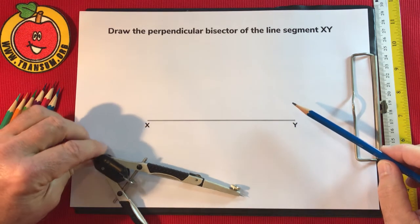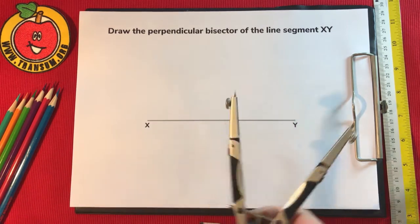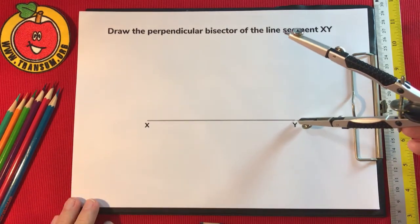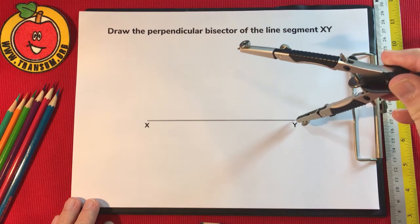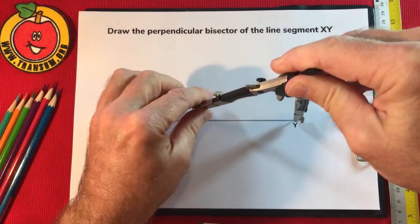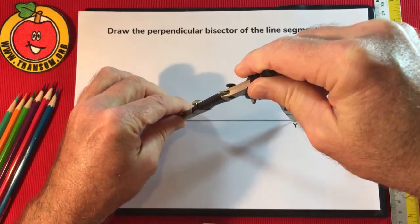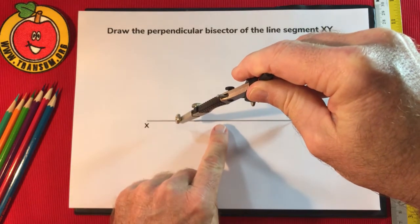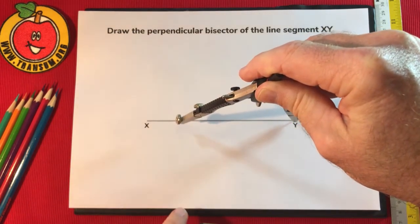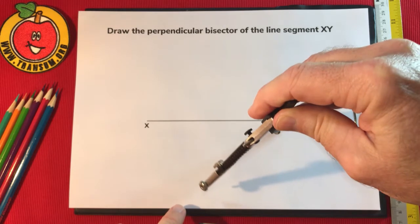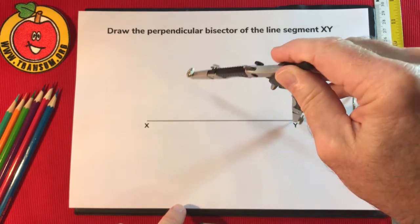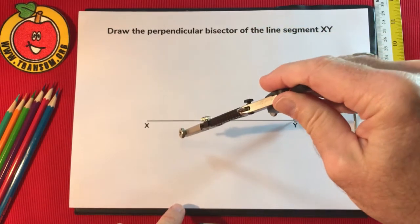The way we do this is with a pair of compasses. First of all, put the point of the compasses on the point Y and set the radius so that it is at least half of the length of the line, but not too long that you can't draw some arcs above and below the line.